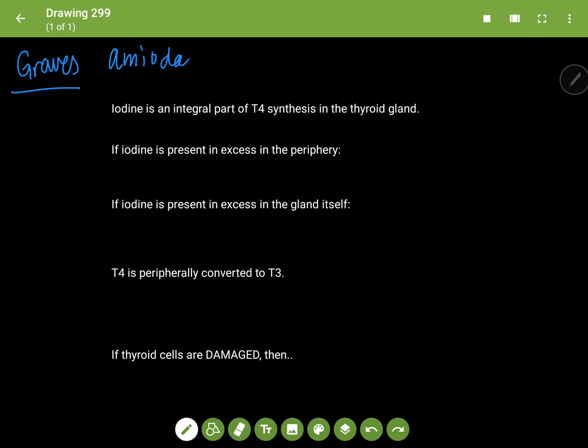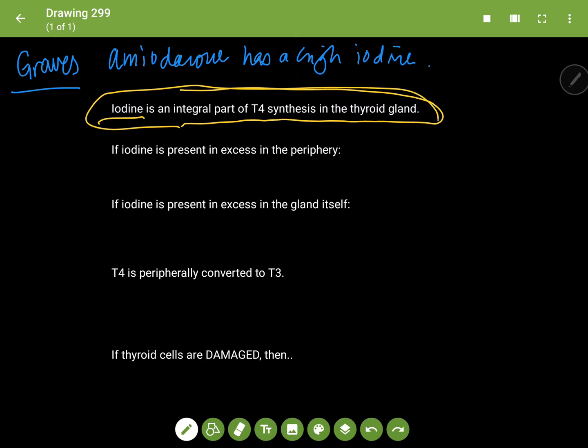That's important because iodine is an integral part of T4 synthesis in the thyroid gland. So if you're taking amiodarone and there's just a lot of amiodarone in your circulation, the fact that there's a lot of iodine in the circulation...